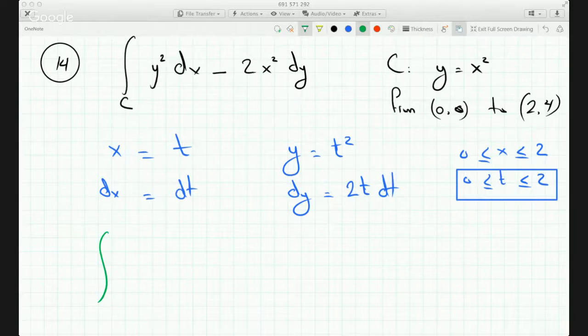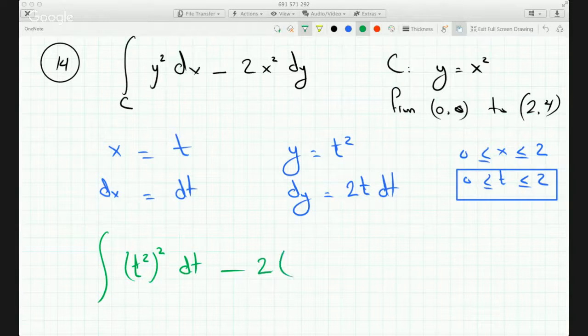And now I can plug back up in the integral. So I will get y squared is just t squared squared times dx, which is dt.